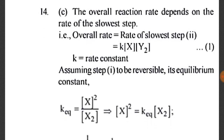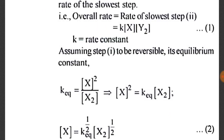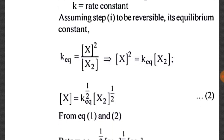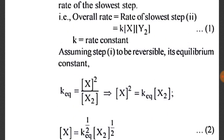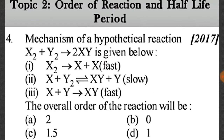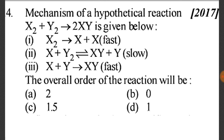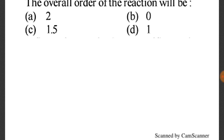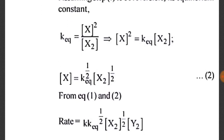Assuming step 1 to be reversible, its equilibrium constant K_eq = [X]² / [X₂]. Therefore [X] = √(K_eq · [X₂]), which gives [X] = K_eq^(1/2) · [X₂]^(1/2).